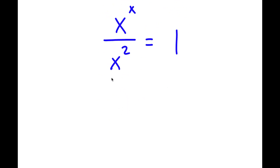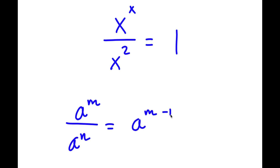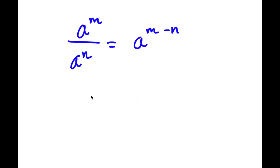Now, if I have something in the form a to the power of m over a to the power of n, this is equal to a to the power of m minus n. So in this case, x to the power of x over x to the power of 2, I'm going to rewrite that as x to the power of x minus 2.